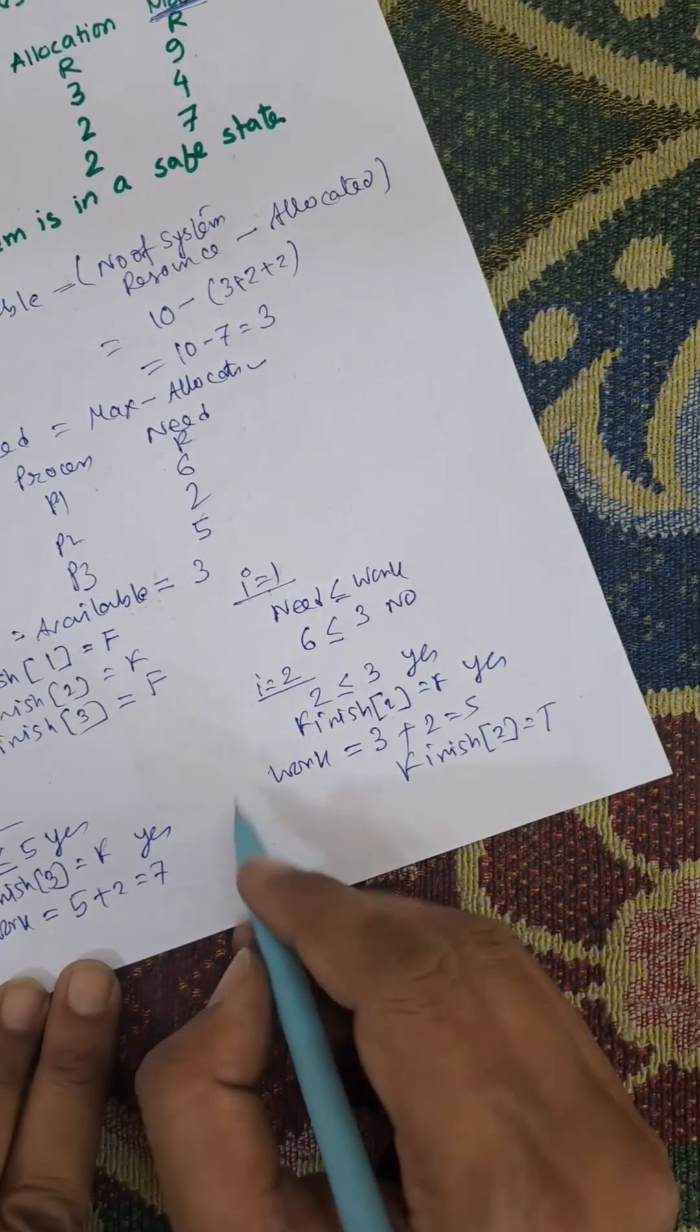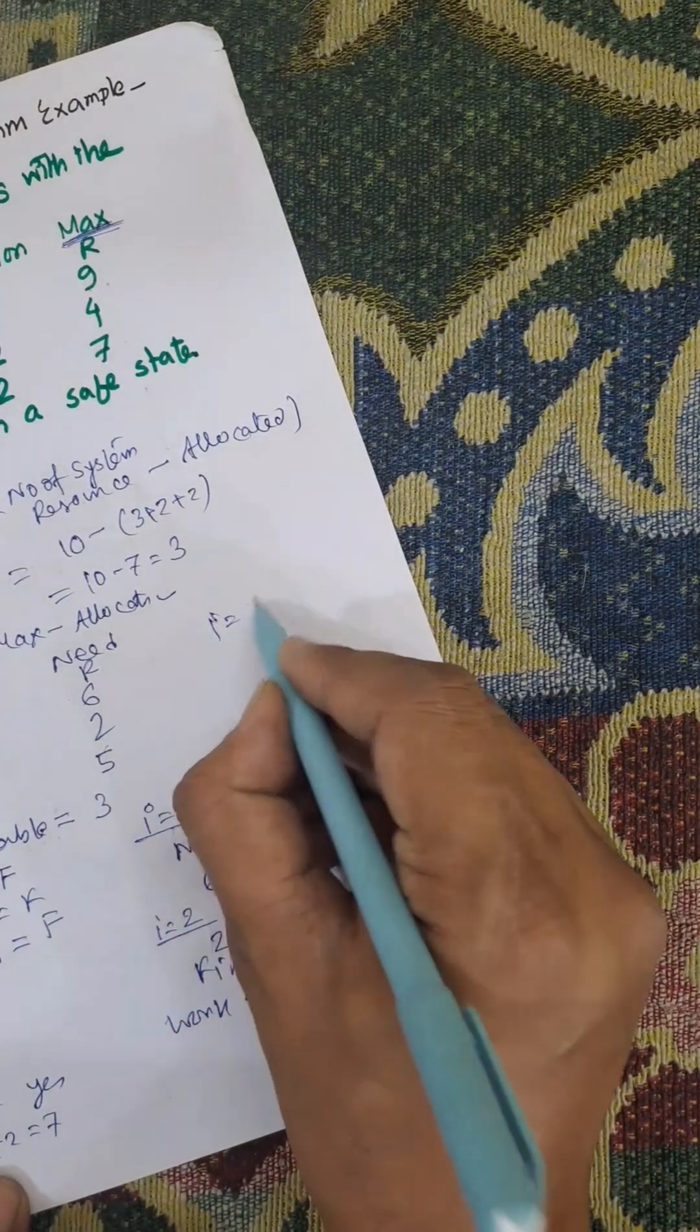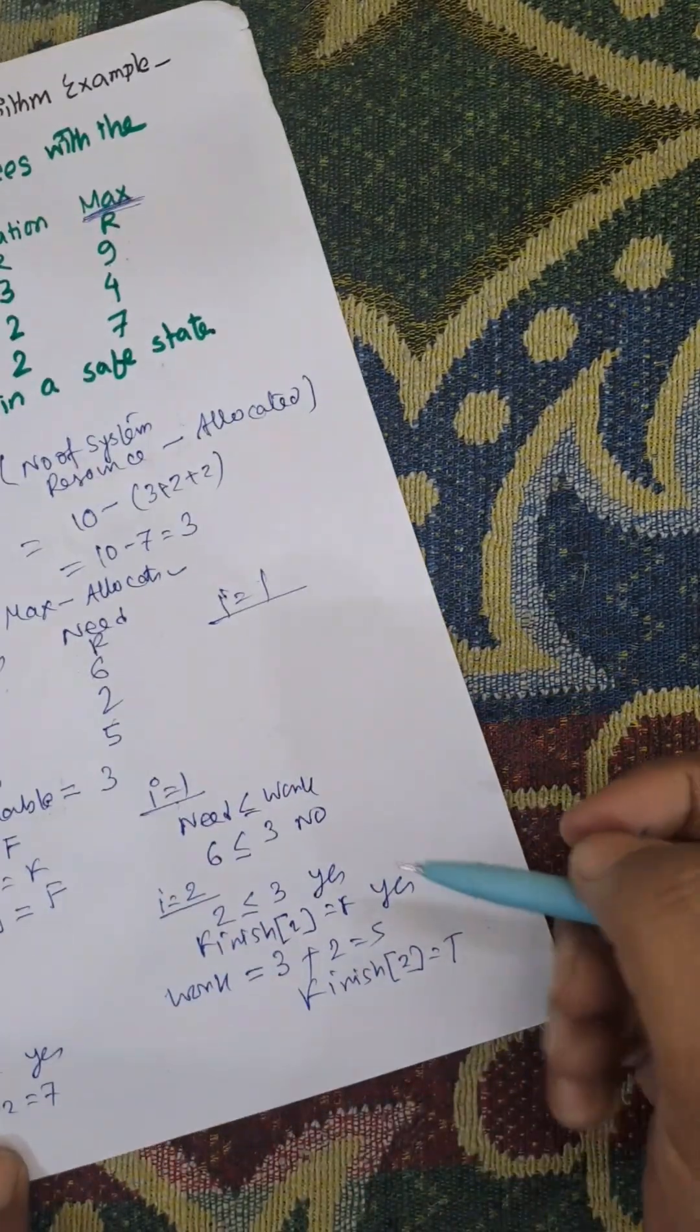Now this is safe. Now again you need to check i equals 1. Initially, need was greater than the work.